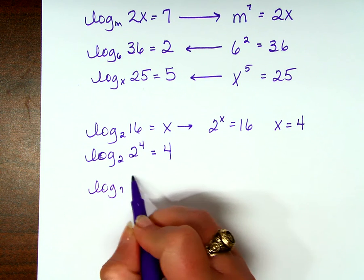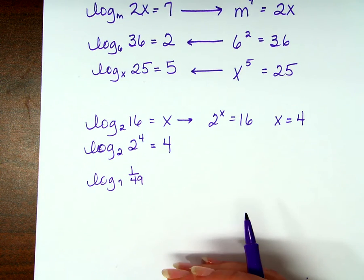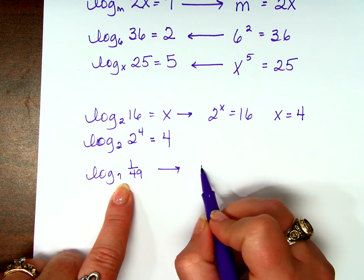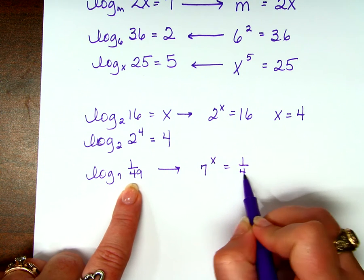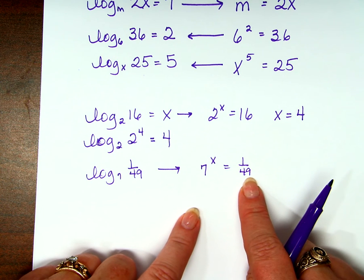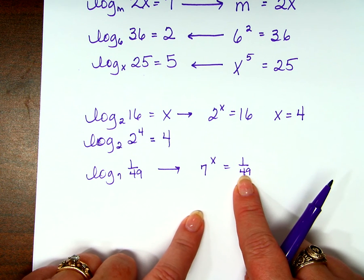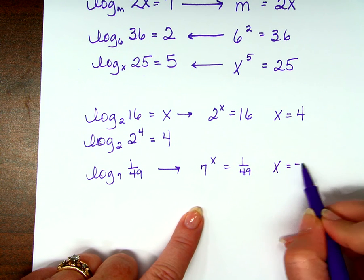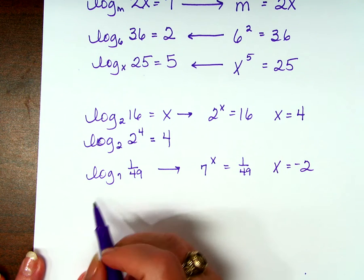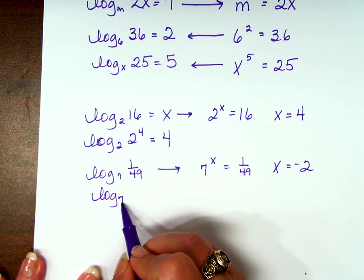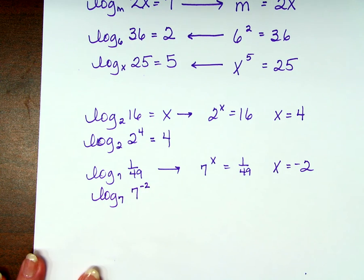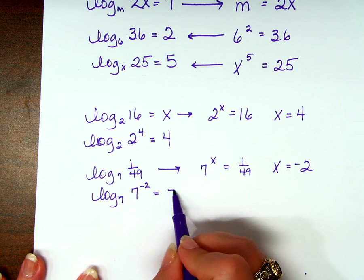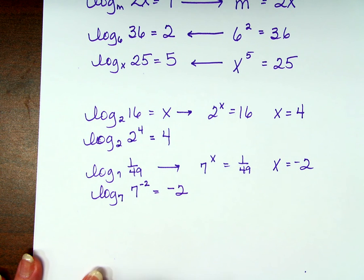Log base 7 of 1 over 49. Could I rewrite that into a way that is easier for me to see? I could say 7 to the x power equals 1 over 49. We know that 49 is 7 squared. But since it's in the denominator, remembering my exponent rules, what makes something go to the denominator? A negative exponent. Or from the very beginning, I could have rewritten this as log base 7 of 7 to the negative 2 power. And when the base and the base are the same, the answer is the exponent.